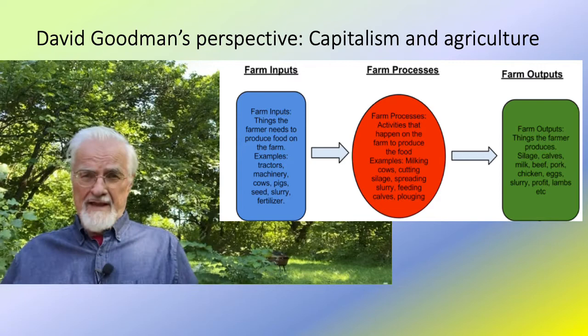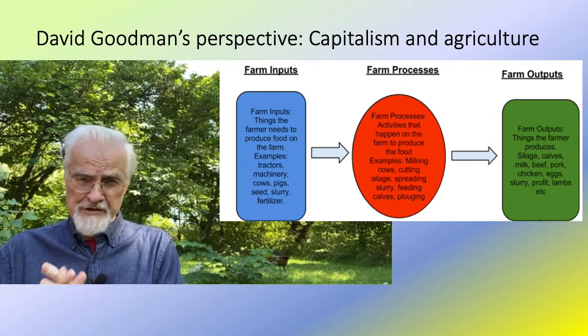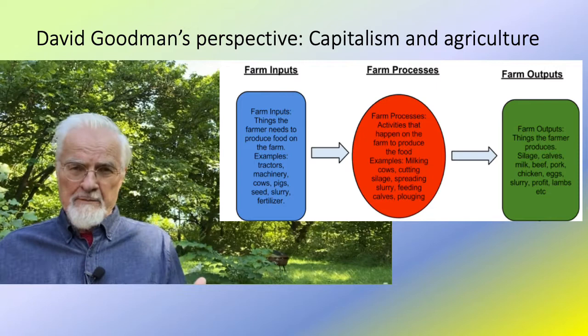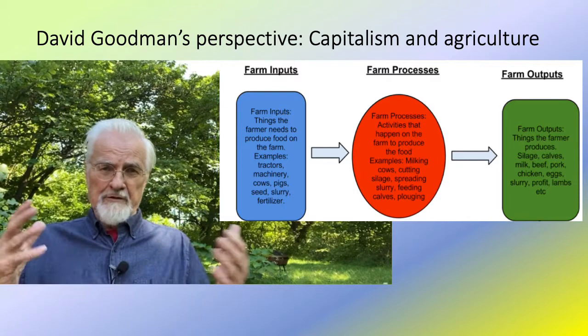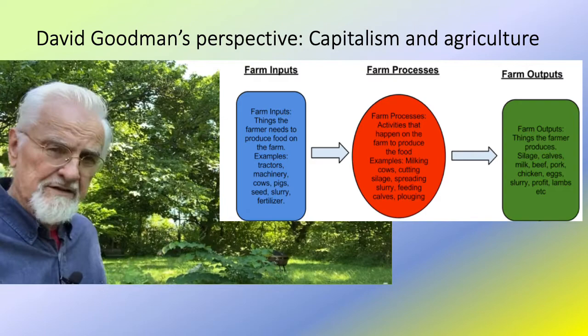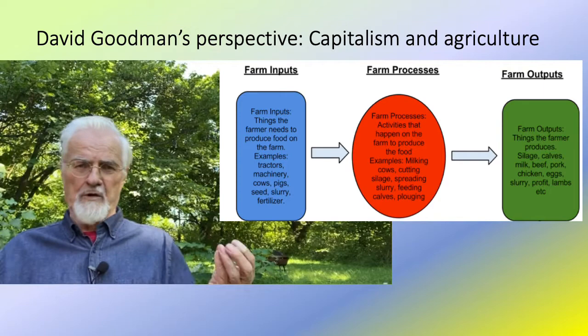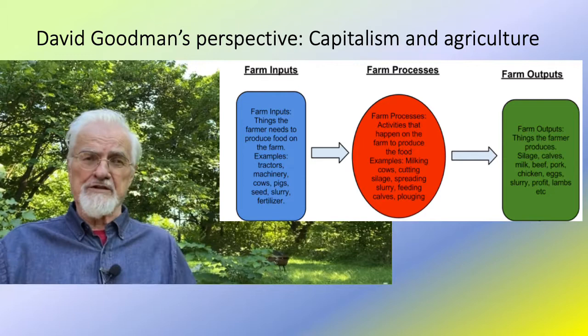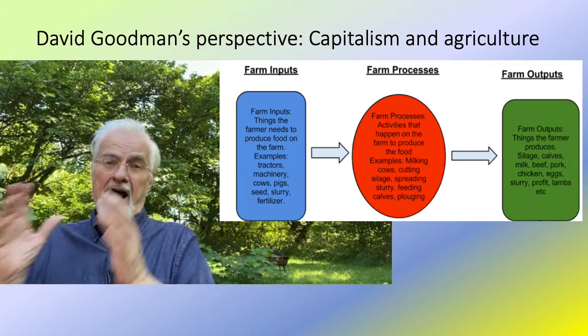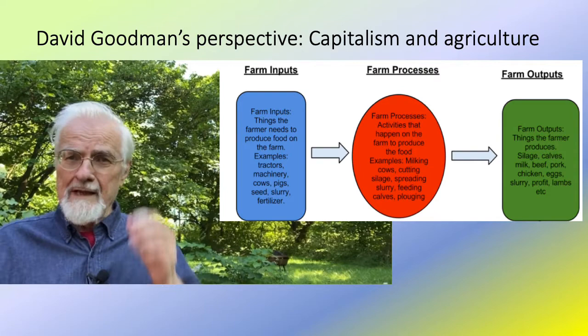Getting down to a slightly more mechanistic way that agriculture operates, David Goodman — a sociologist and economist from UC Santa Cruz — laid out a scheme for thinking about how agriculture actually works. He divided the agricultural enterprise into inputs, the farming operation itself, and the outputs. Inputs are things like machinery, seeds, and pesticides. The farming operation is what you do on the farm — plowing, sowing seeds. And the outputs are the seeds or fruits that you sell.